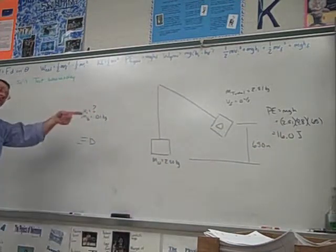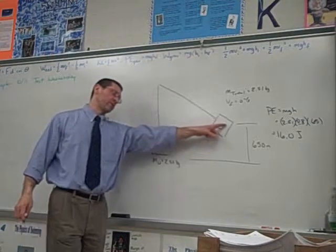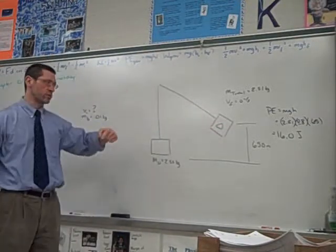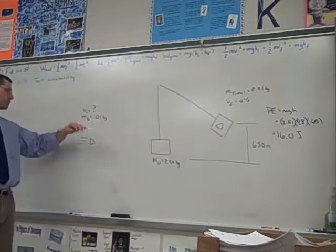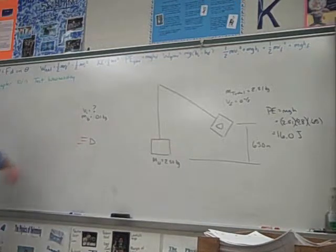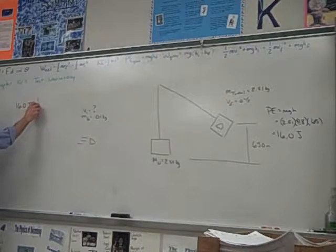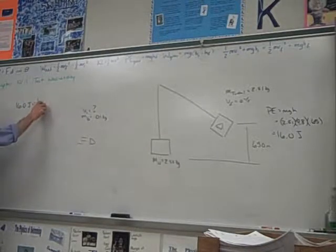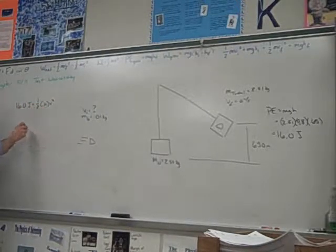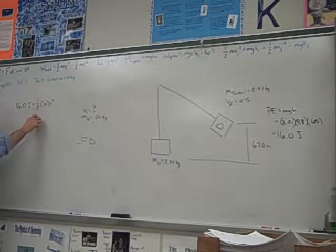So then, if it has 16 joules here of energy, potential energy, then it must have 16 joules of kinetic energy. So, figure this has kinetic energy of 16 joules, and that equals the mass of the bullet times v squared. So, v is 56 meters per second.